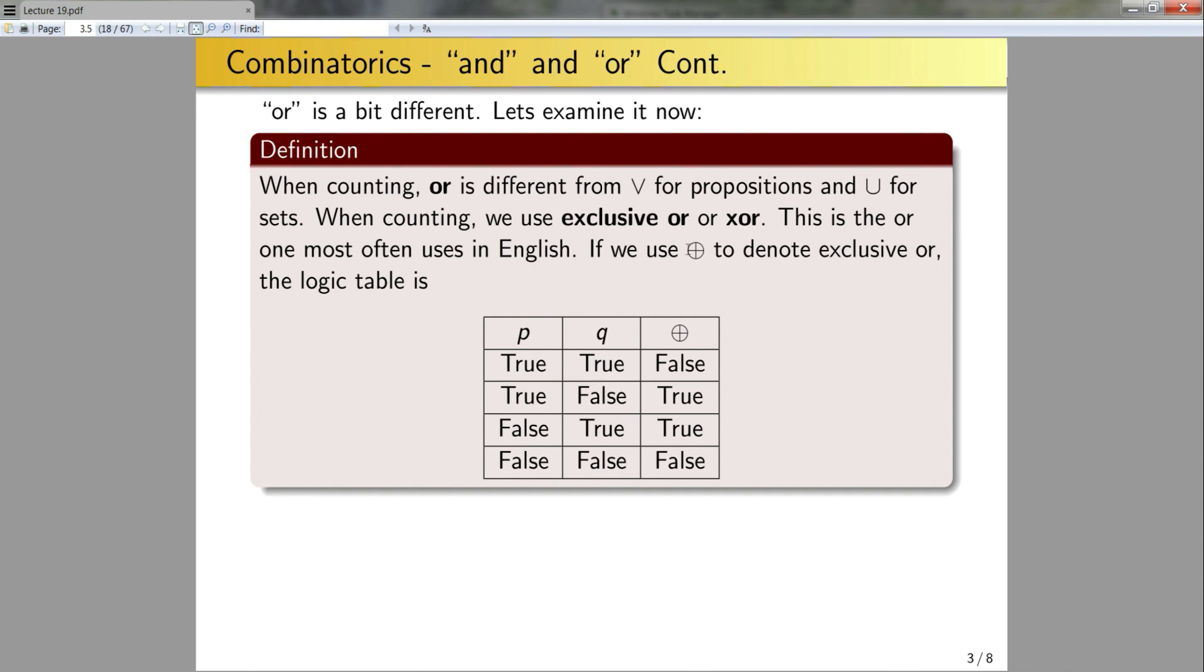If I use this symbol here to denote exclusive OR, and this is a common symbol that's used, the logic table for exclusive OR would be given by this statement here. The only difference between exclusive OR and OR is that if P is true and Q is true, exclusive OR will be false because it has to be one or the other, not both.